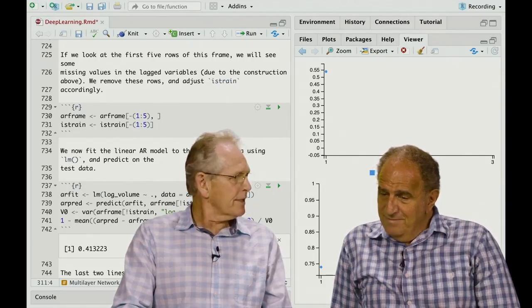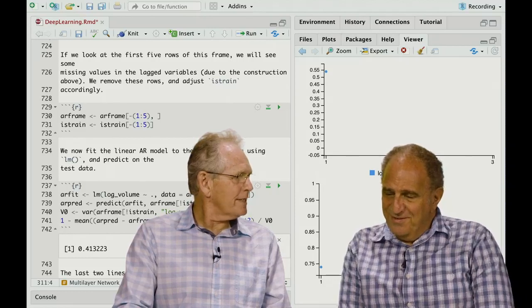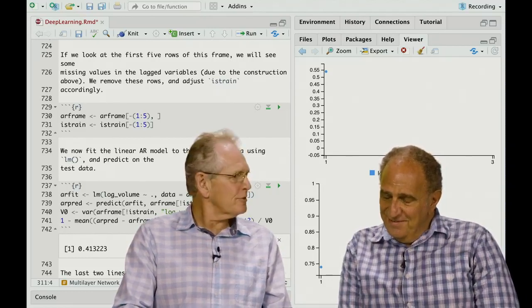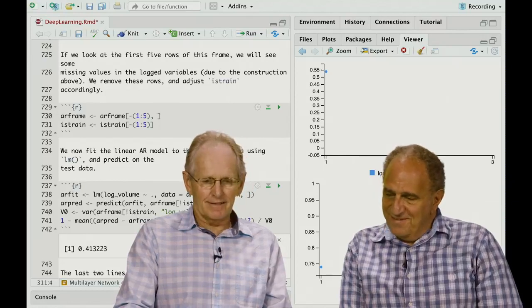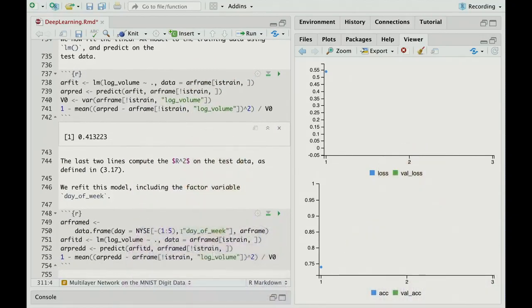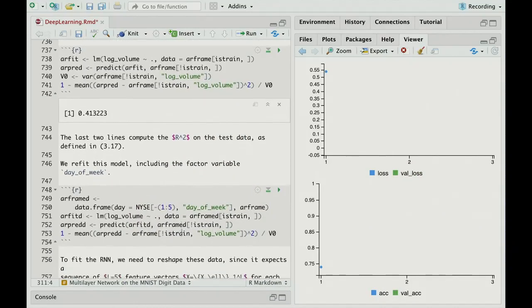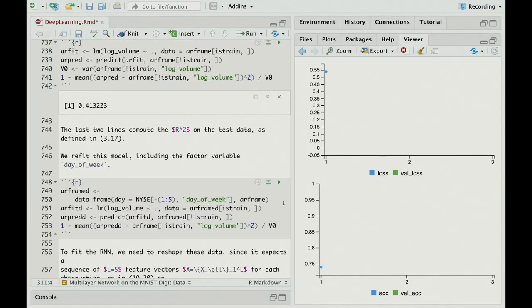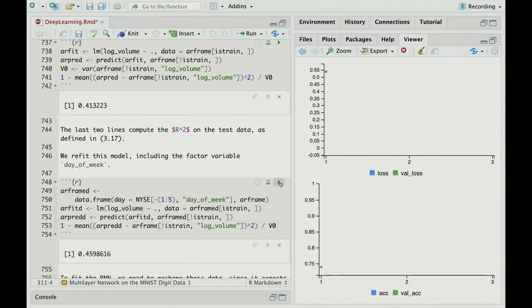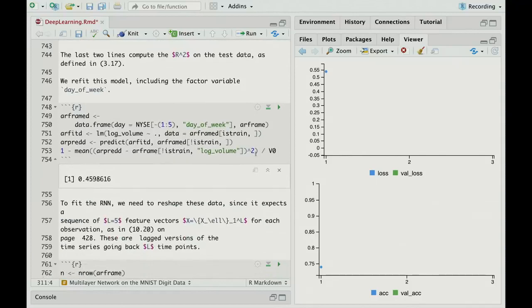We saw in the text that if you added day of the week, so each of the days in these data is a trading day, and they occur on days of the week. And some days of the week have higher volume, often at the beginning or end of the week. So we're going to add that as a factor variable. We're going to just add it to the model and refit, and we see that the R squared goes up to 46%, which is, clearly, that's an important variable.